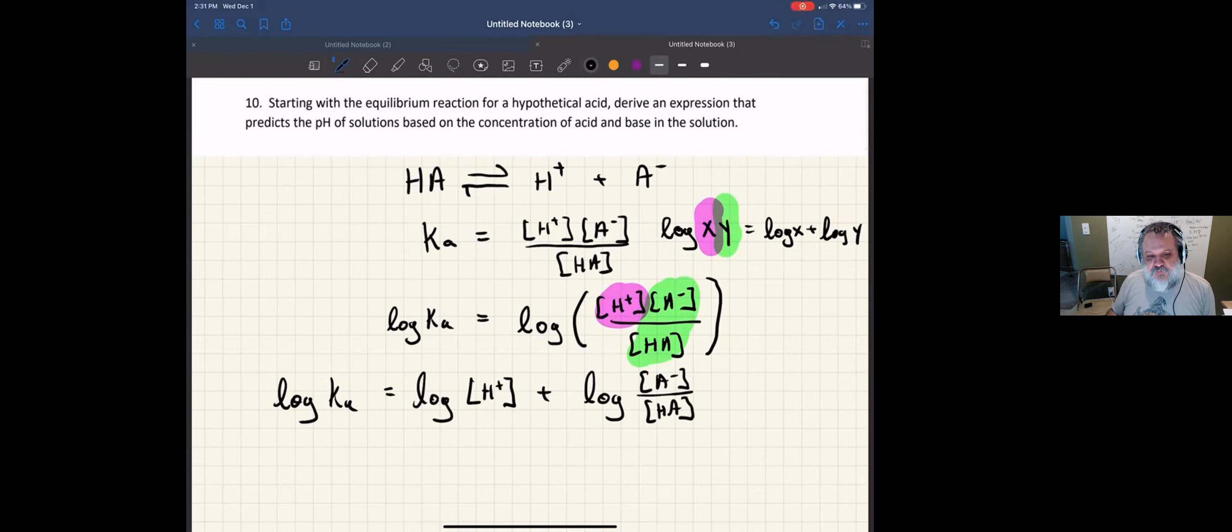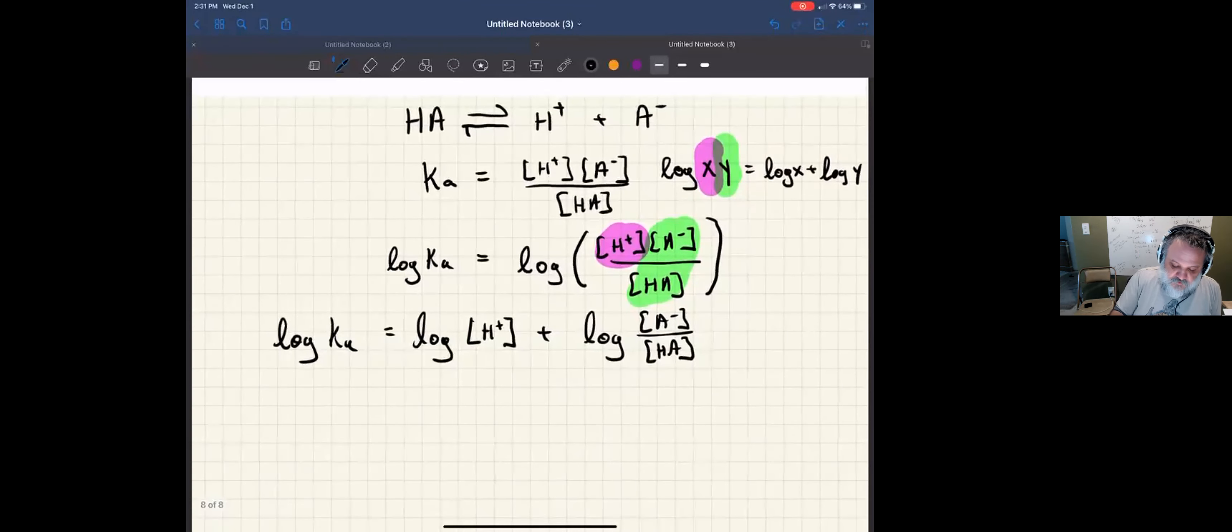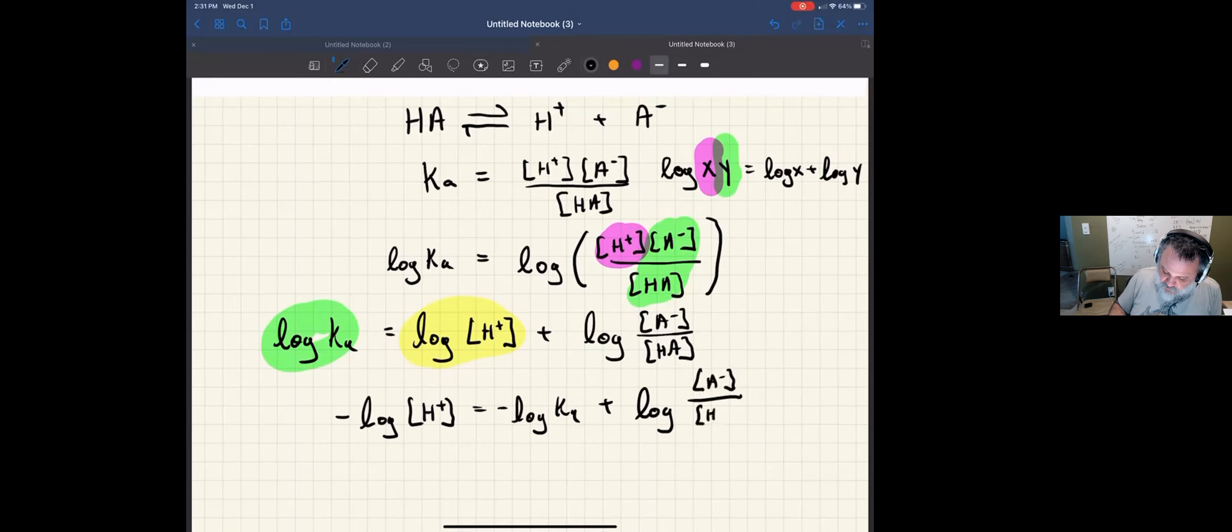And to simplify it even further, let's subtract the log of Ka from both sides, and let's subtract the log of H plus from both sides. So we end up with negative log of H plus equals negative log of Ka plus the log A minus over HA.